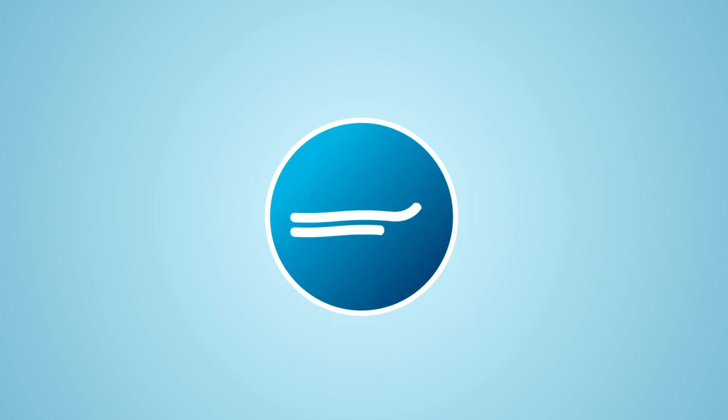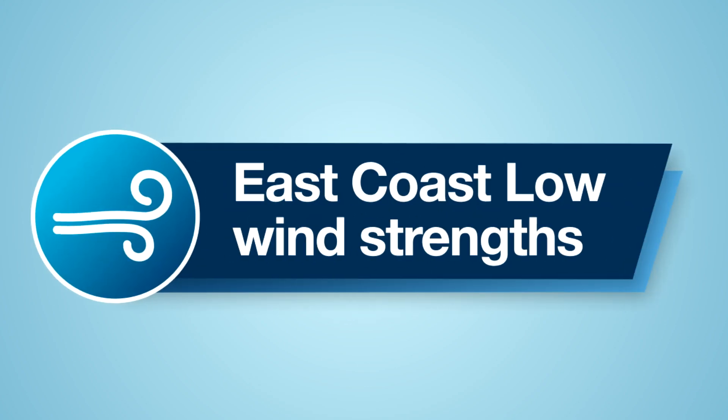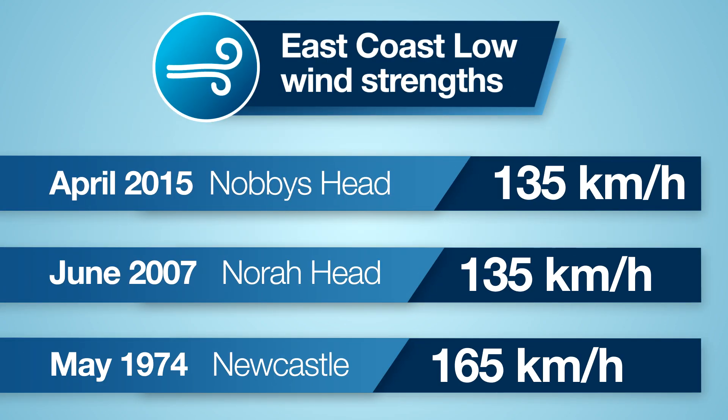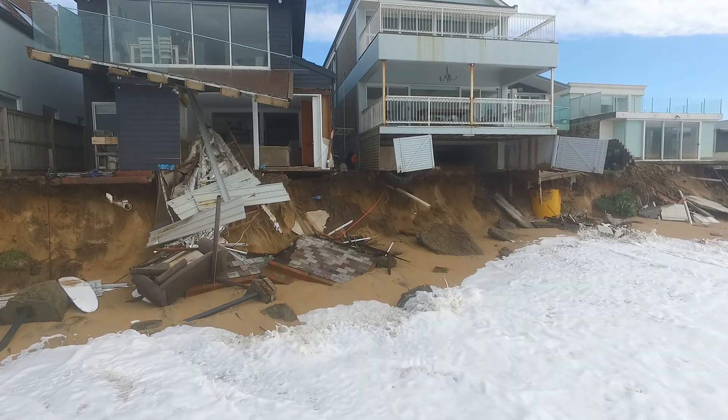In terms of strength, the really intense East Coast lows can produce winds equivalent to a category one or even a category two cyclone. They're generally a little more short-lived than a tropical cyclone, but in terms of their peak intensity they can be fairly similar.